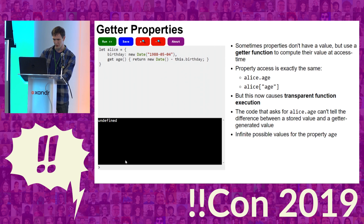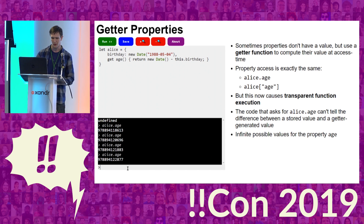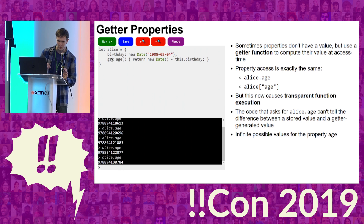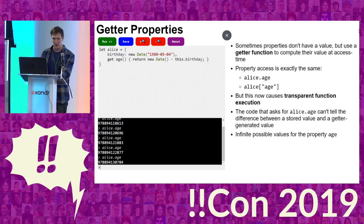Here I have an object that's doing something kind of interesting: it has an age, but the age doesn't have a value — it has a getter function. So every time I ask for age, it's actually running this function. I'm not calling it with parentheses like you'd call a function; I'm just saying, what's the age? And inside the object it figures out the age — and that's actually Alice's age in milliseconds. You can't tell there's a getter from the outside, but there are infinite possible values for that property.